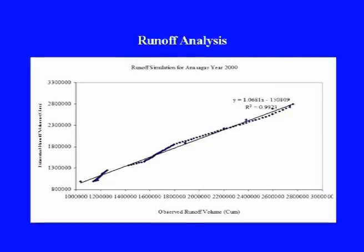Calibration was performed and shows that the runoff simulation for the year 2000 for Anasagar has a very close match between observed and estimated runoff. During the dry period, the model tends to under-simulate, but once a rainfall event has occurred, the nature of simulation is very much in line with observed information. Using regression analysis, the relationship can be expressed as: y = 1.0681x − 150,809, where x is the observed runoff value and y is the estimated runoff value. This relationship has a regression coefficient close to 0.99, which is a very good representation.